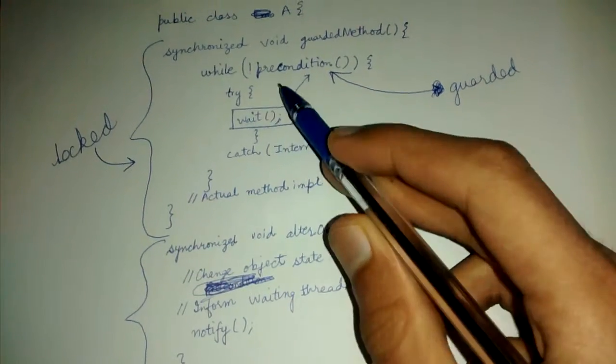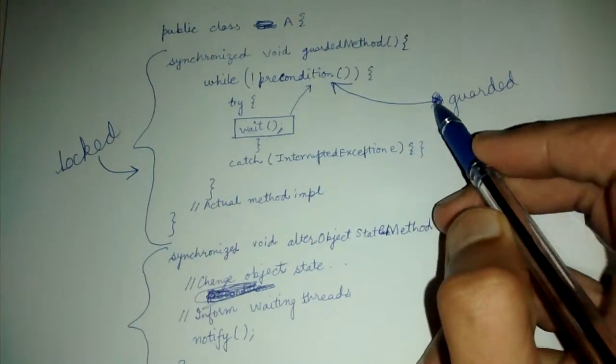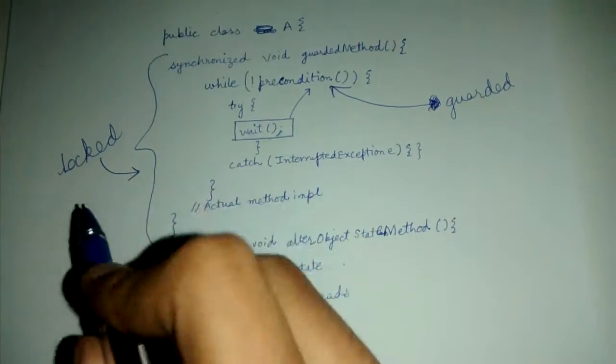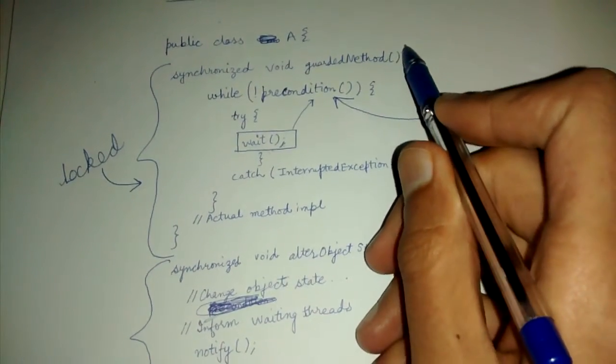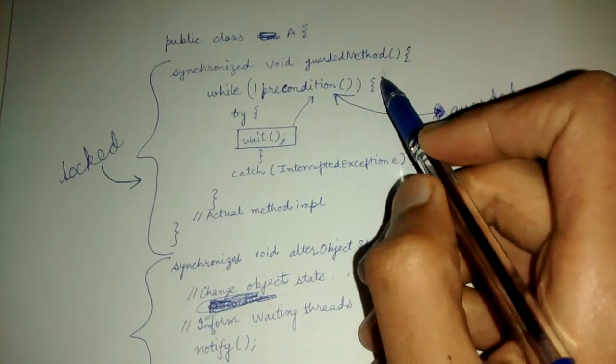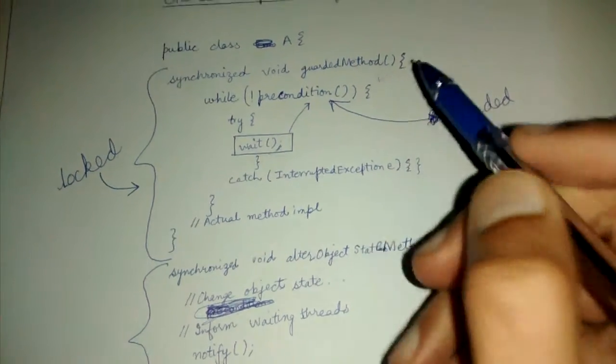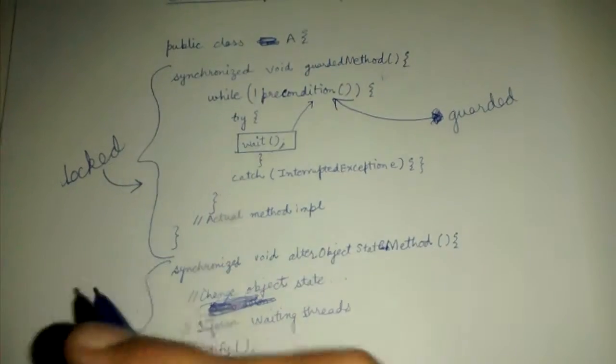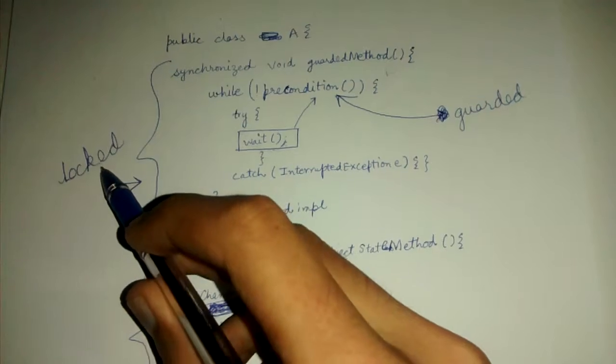So that this method can proceed to the actual method implementation. This method will wait till this precondition is true, so hence it is guarded by this precondition. First thing is the thread cannot enter in this method if any other synchronized method has already been called on that object.